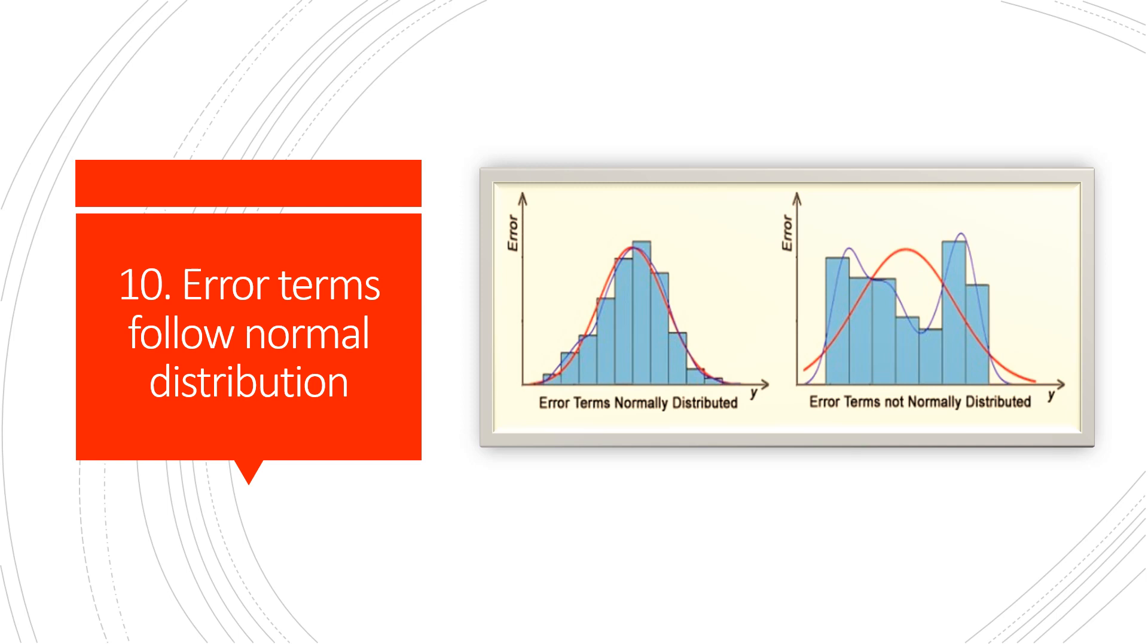And now the last but not the least assumption says that the error terms should follow normal distribution. The graph for the normal distribution looks like this and not this. The second graph is the violation of this assumption. So it is very clear from the figure how the normal distribution looks like.